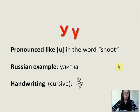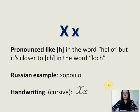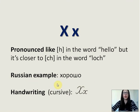Х is pronounced like H in the word 'hello,' but some people say it's closer to K in the word 'loch' — so it's kind of a double sound. Russian example: 'хорошо,' which means good, well, or okay.